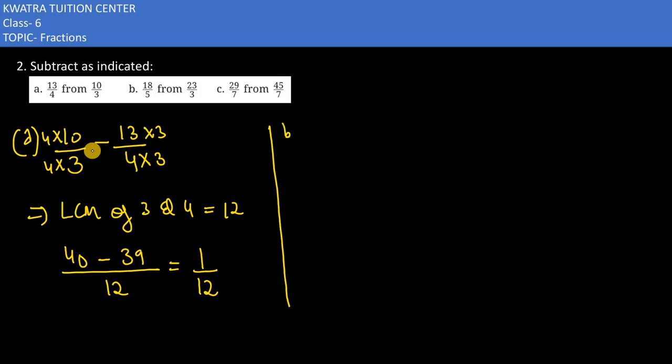In part B, we have 23/3, and the first number is 18/5. Now subtract it. Subtraction is not possible unless you take the LCM of 3 and 5, which would be 15.